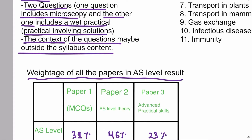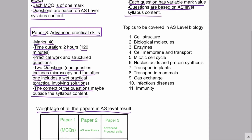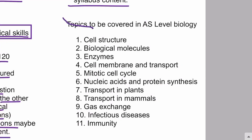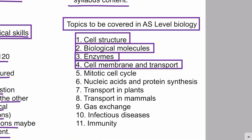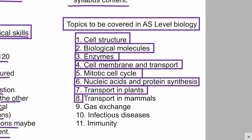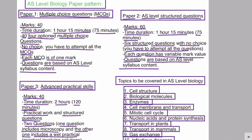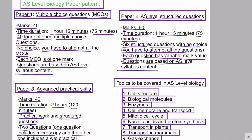In order to achieve an A in AS level, you need to score very well in Paper 2. Note that the maximum grade in AS level is A — there is no A star at AS level. The AS level biology syllabus has a total of 11 topics: cell structure, biological molecules, enzymes, cell membrane and transport, mitotic cell cycle, nucleic acids and protein synthesis, transport in plants, transport in mammals, gas exchange, infectious diseases, and immunity. Thank you so much for watching — don't forget to subscribe to my YouTube channel.